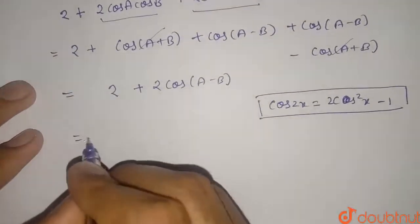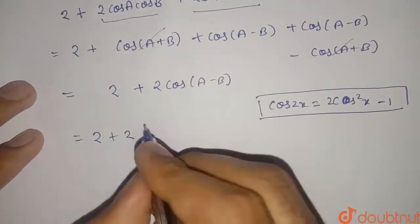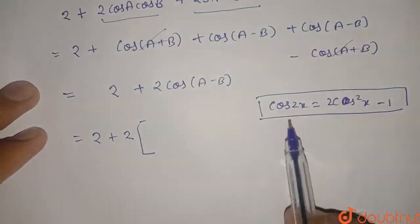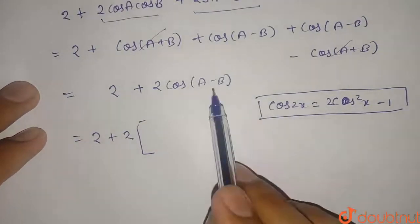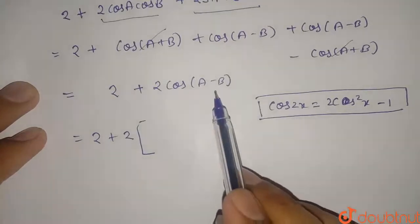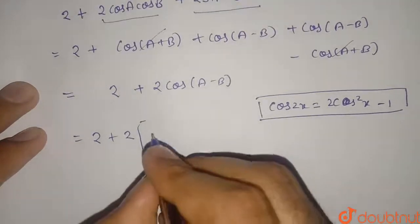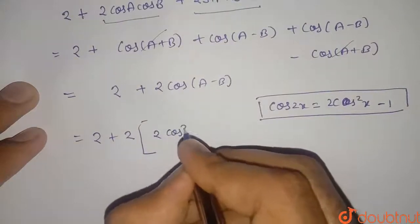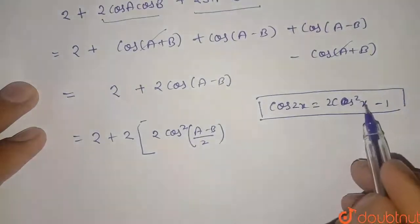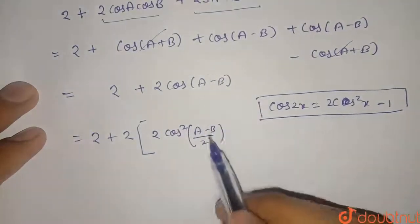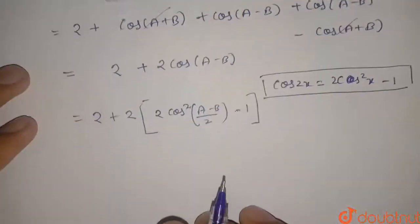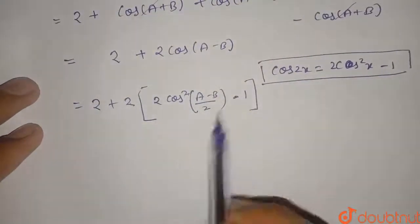It will be 2 + 2 times, and taking cos(A-B) equal to 2x, the value of x will be (A-B)/2. So it will be 2 cos²((A-B)/2) - 1.